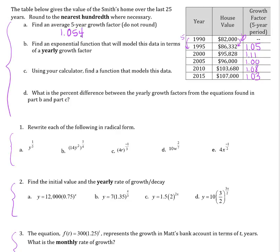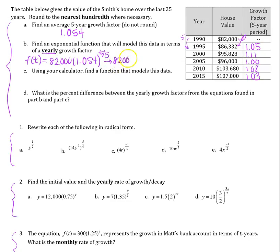To find the exponential function in terms of yearly growth, recognize that 1.054 isn't happening every year — it's happening every five years. So writing f of t where t is years, the initial is 82,000 and the growth is 1.054 to the t over 5. To get it in terms of once per year — a plain 1t exponent — I bring the one-fifth in from the exponent inside the base.